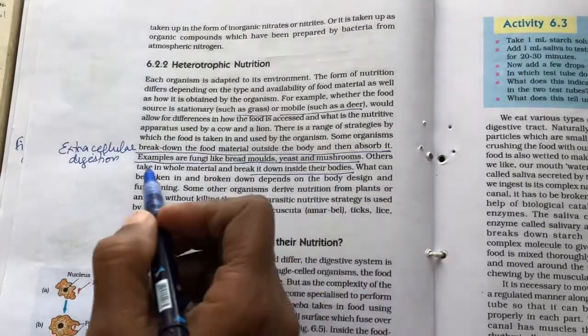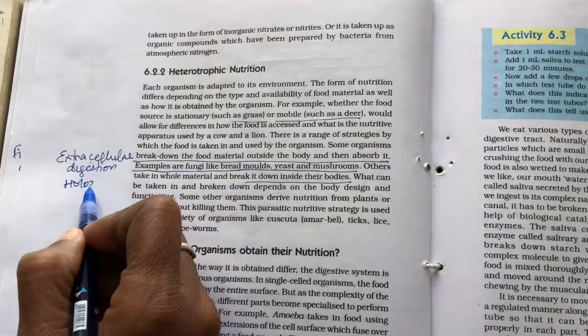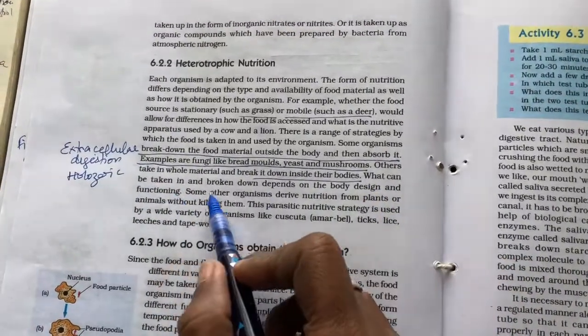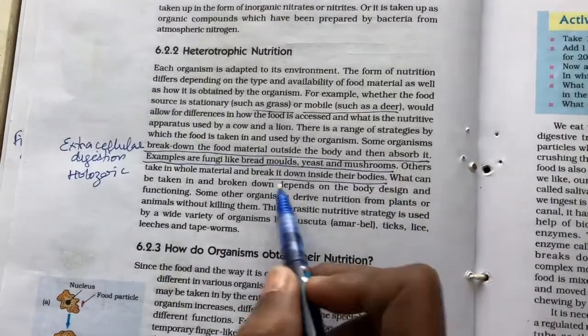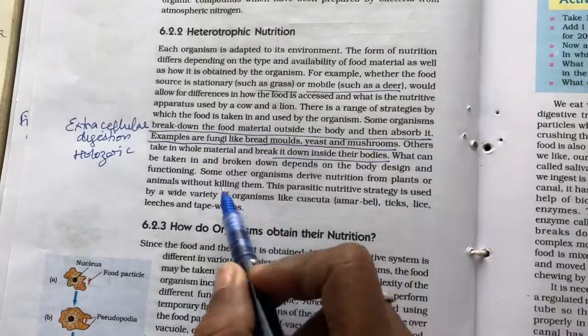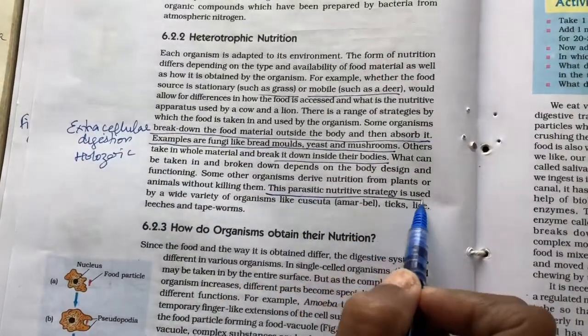Others take in the whole material and break it down inside the body. This is what we say is holozoic nutrition. This is also extracellular only but this is holozoic mode of nutrition. What can be taken in and broken down depends on the body design and functioning. Some other organisms derive nutrition from plants and animals without killing them. This is called parasitic nutritive strategy.